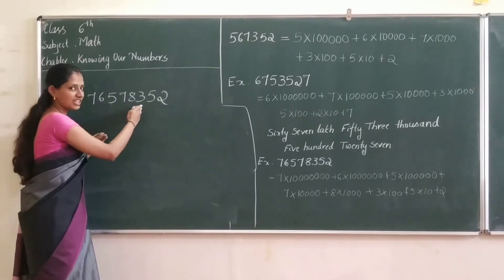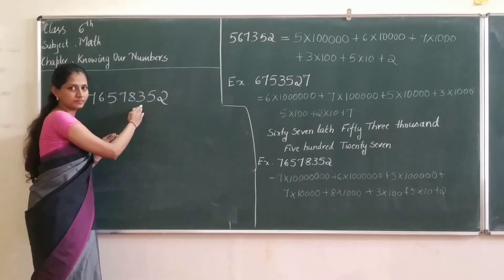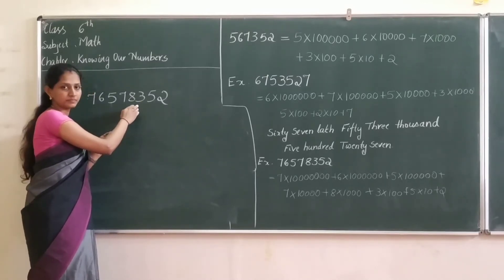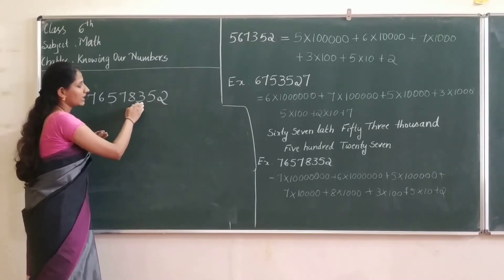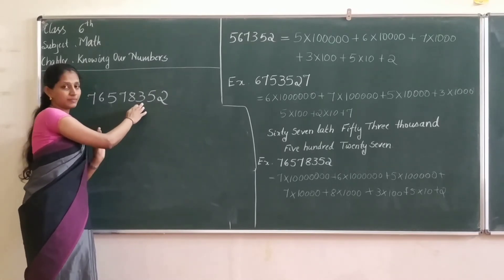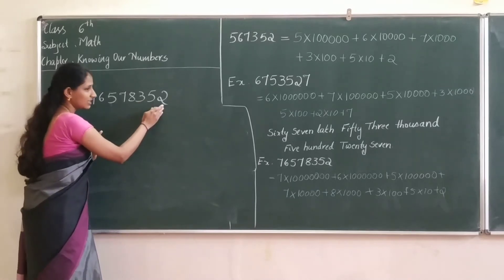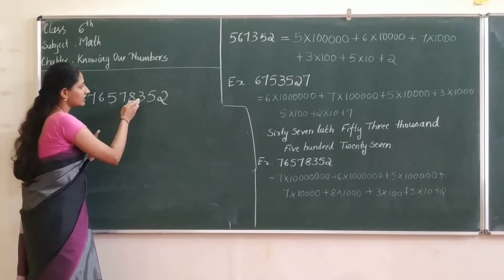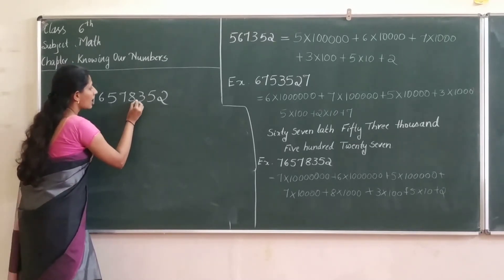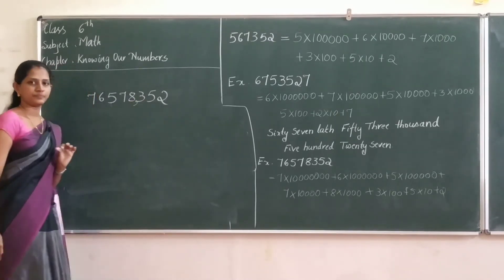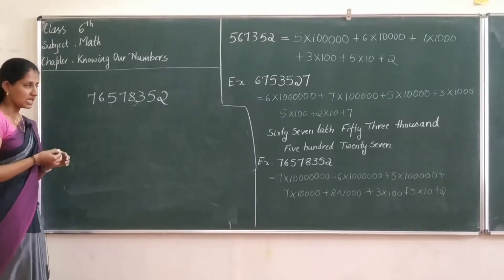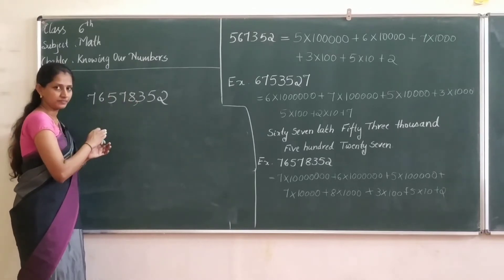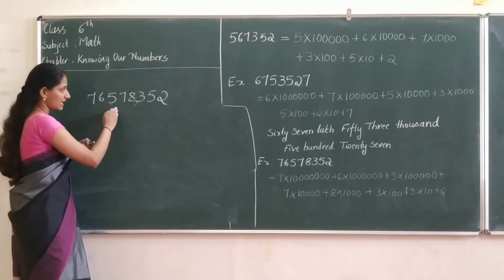After the hundreds place. That is: units, 10, and 100 place — after the hundreds place we have to put one comma. Then, after 2 more digits from there — that is after the 5th digit from the right side — we put the second comma.